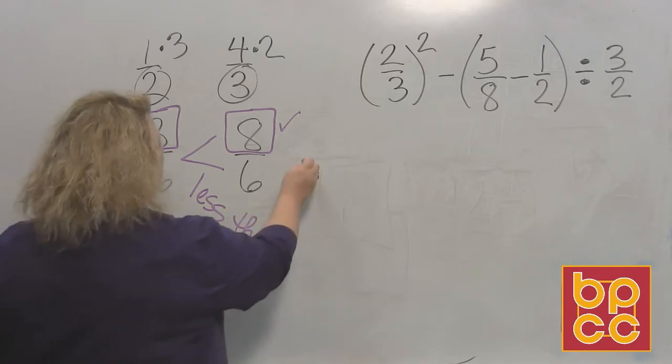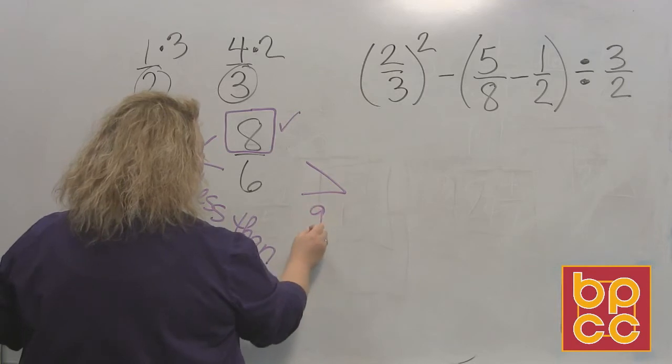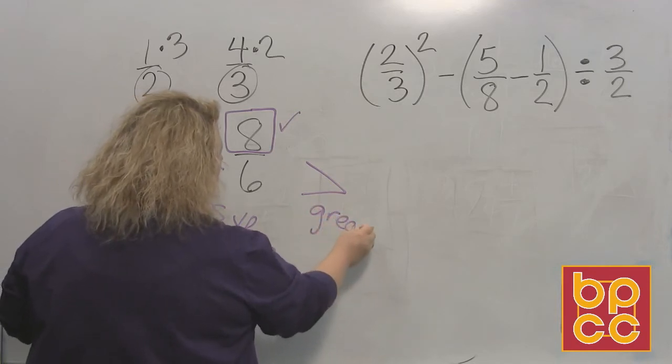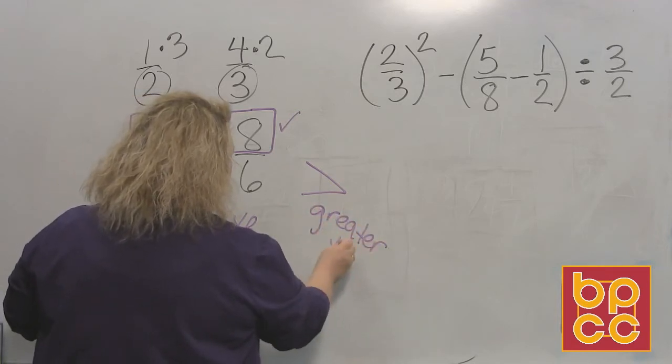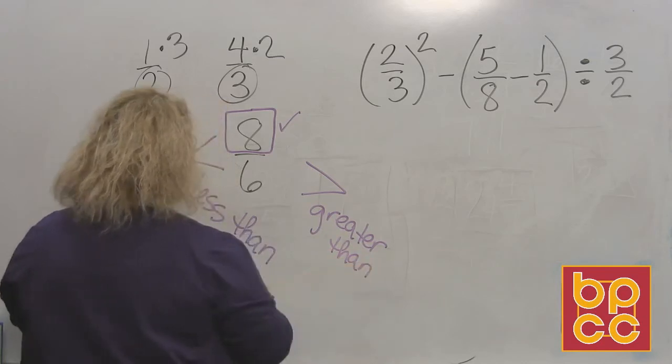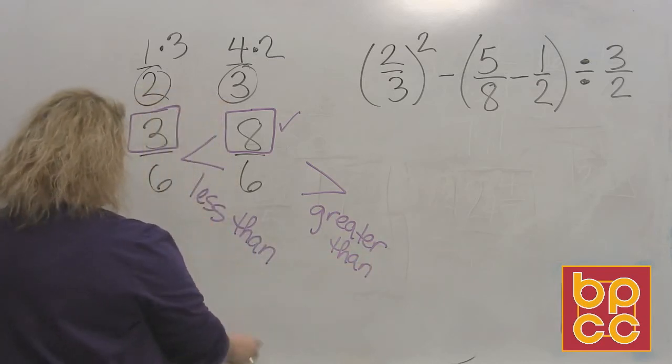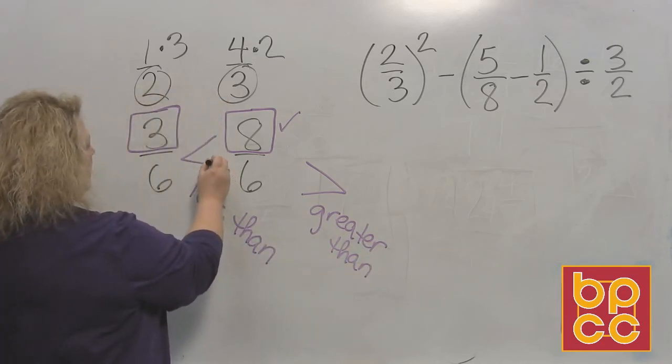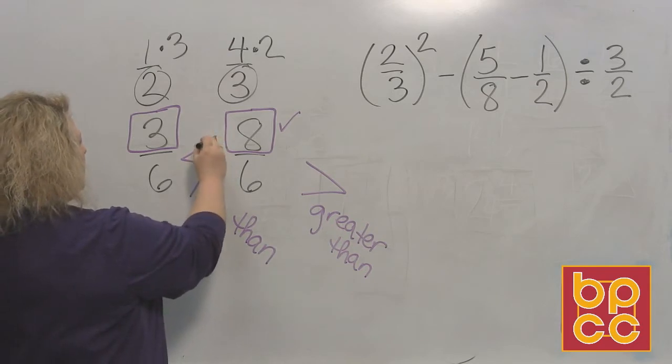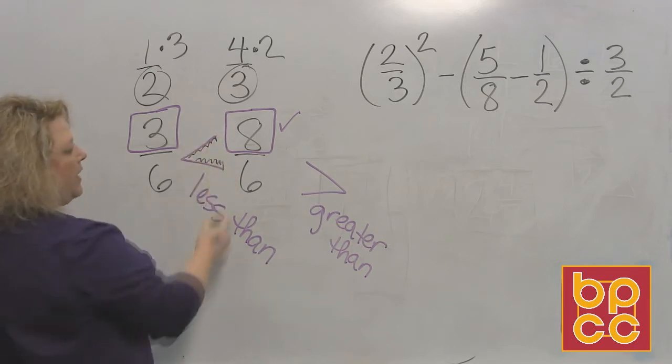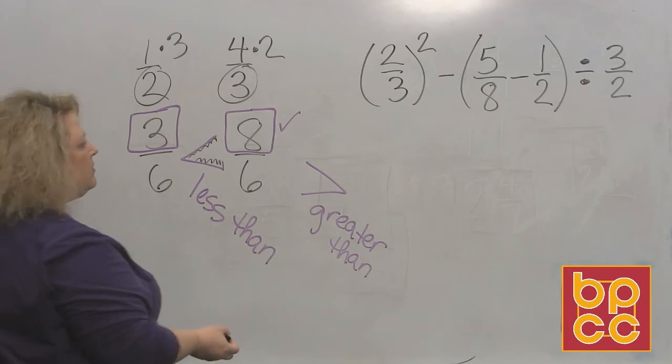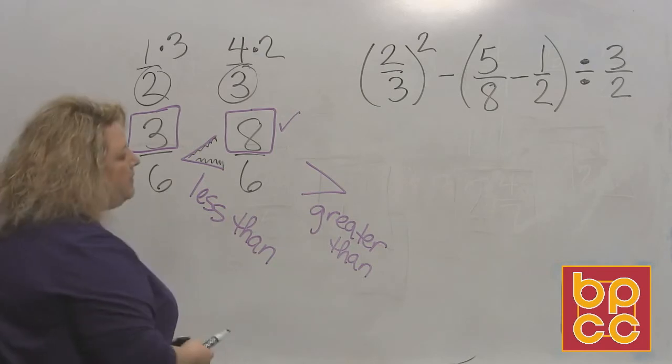If the symbol pointed to the right, it would be greater than. And a way that a lot of people remember this is to make like a little alligator mouth out of them and say that the alligator eats the bigger number.